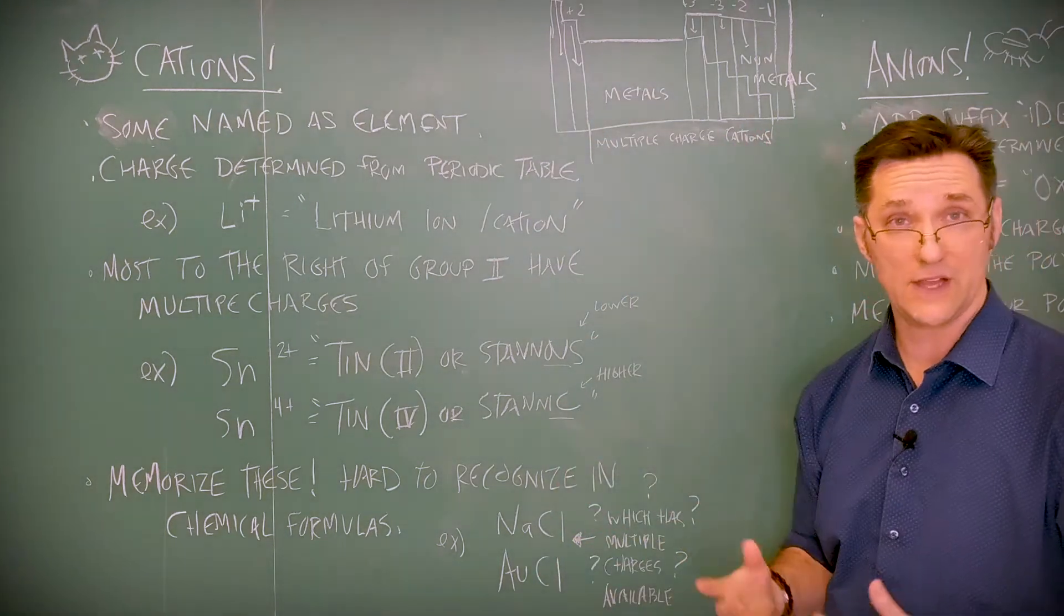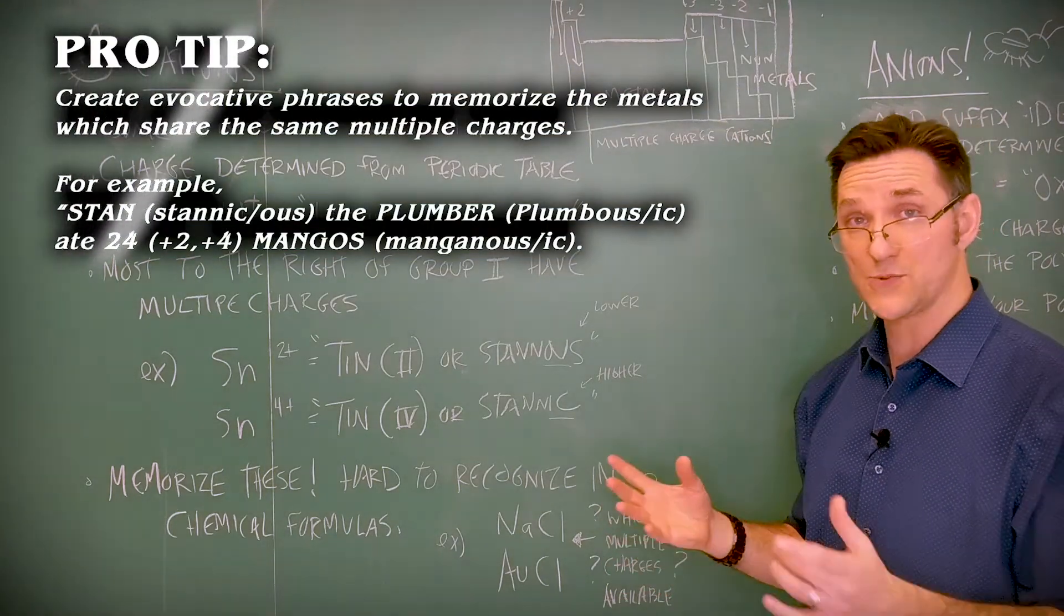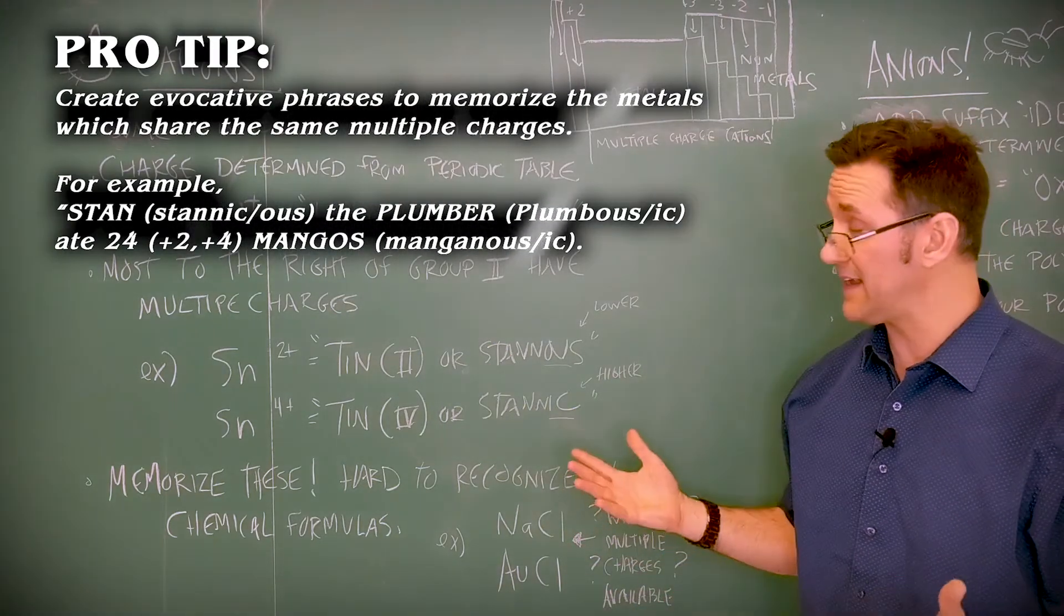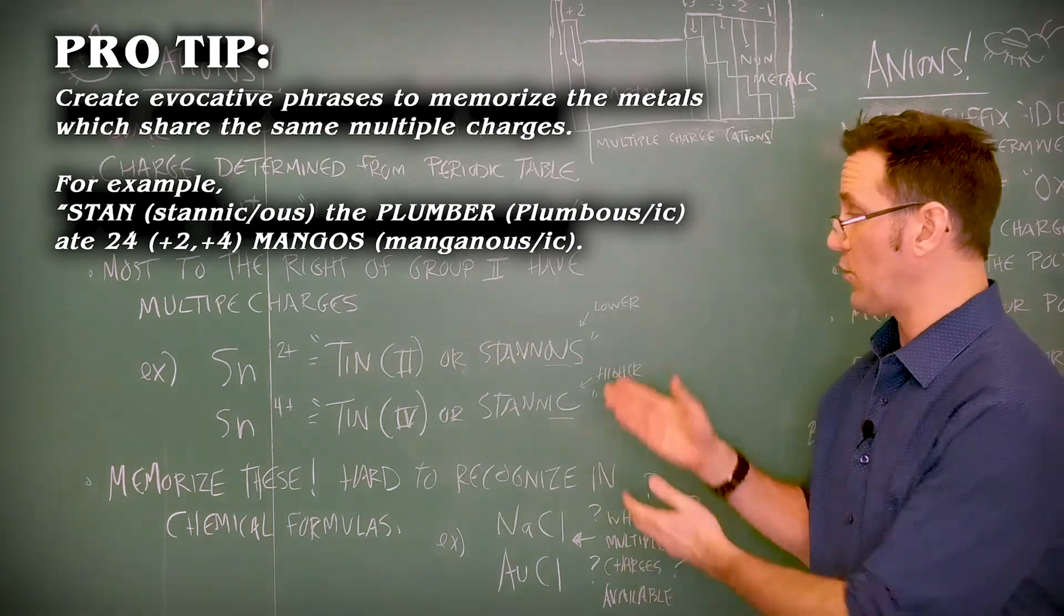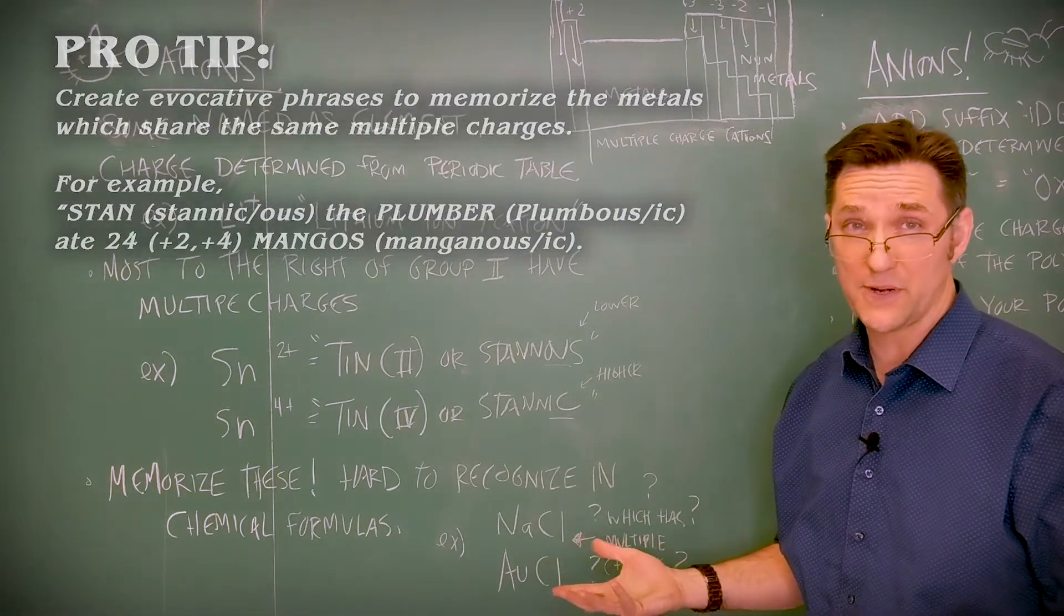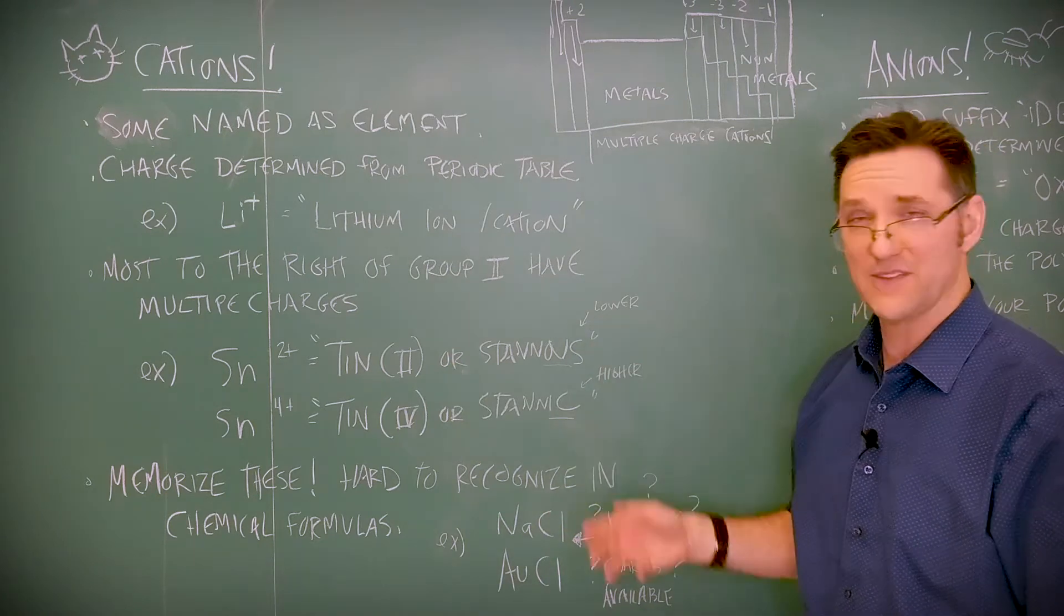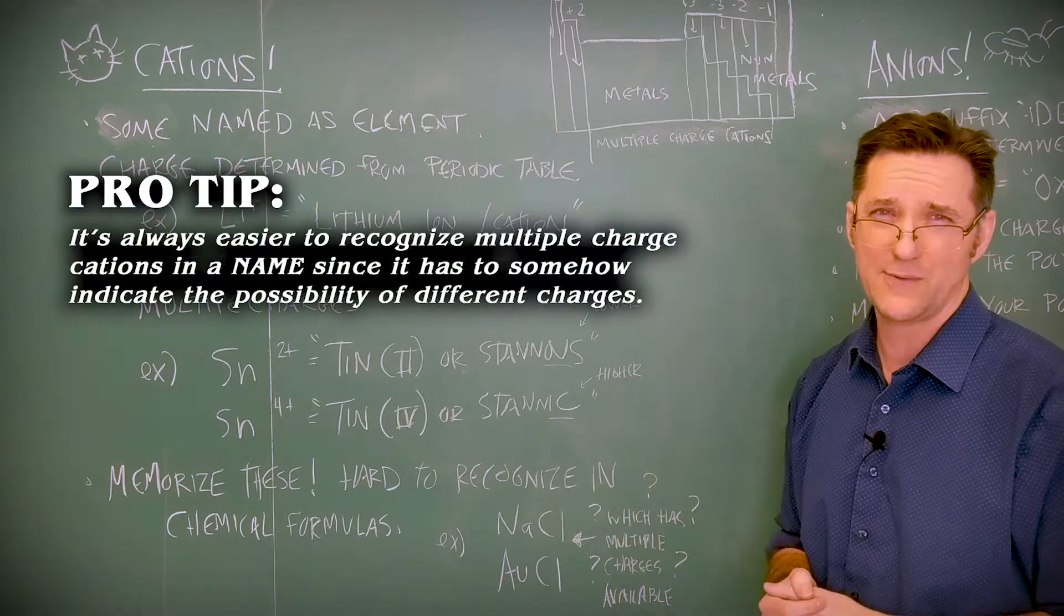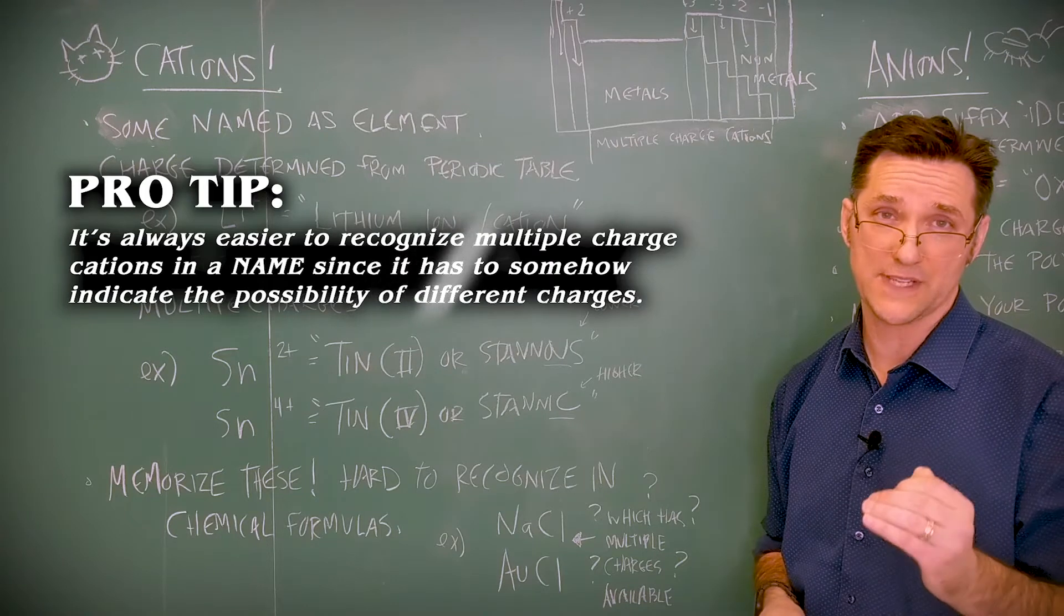Beyond the alkaline earth metals, we have a lot of multiple charges. And so you really need to be able to recognize these metals and know which ones have multiple charges. For instance, tin has two, plus two and plus four. You can just say tin-2 and tin-4 using Roman numerals, or you can use the old school names, Stan-us or Stan-ic.